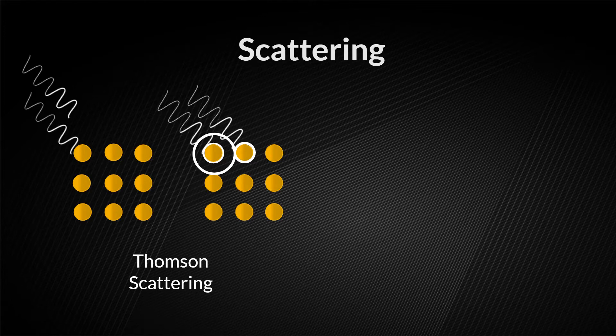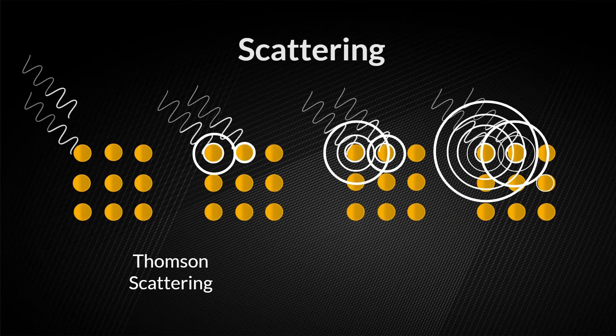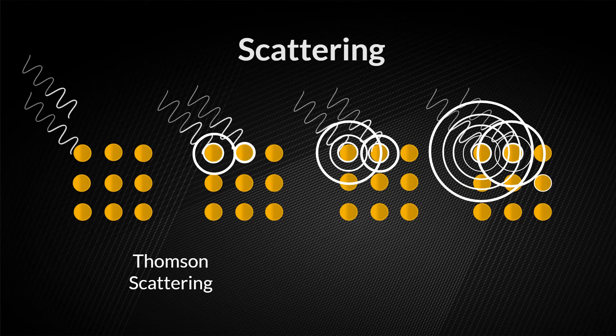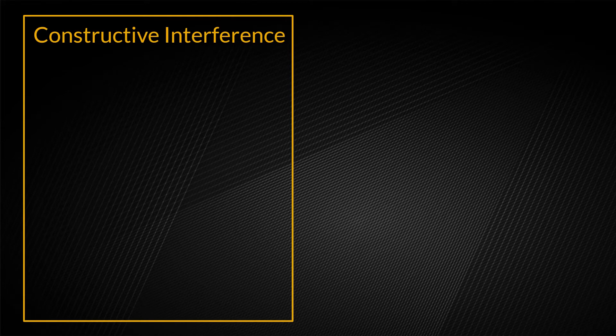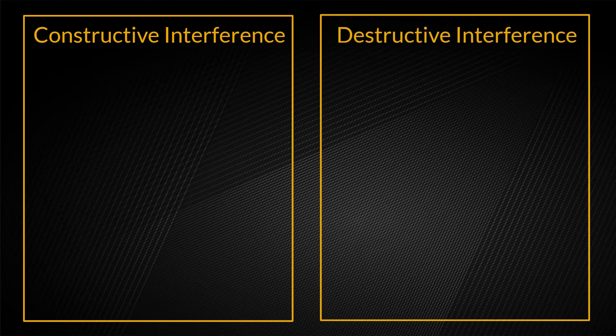All of the individual sources of scatter will then constructively and destructively interfere with each other, creating a diffraction pattern. In order for diffraction to occur, there must be constructive interference.